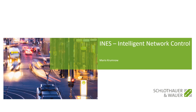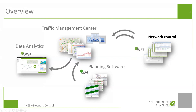Thank you very much, Paul, for the short introduction. Today I'm going to talk about INES — the Intelligent Network Control. Let's start with a small overview about the project of Schluter & Wauer and see the effect of INES. First, in the pre-processing step, there's planning software for traffic lights, for logic, for actuated traffic light logics, and of course for coordination rules. The next thing is the operational mode — during the runtime of a traffic light controller, we have a tool called INES, the network control, which I'm going to talk about today. In post-processing, we have a tool for data analytics done by Anna. And all this is orchestrated from a traffic management center. Network control is part of the operational management of traffic lights.